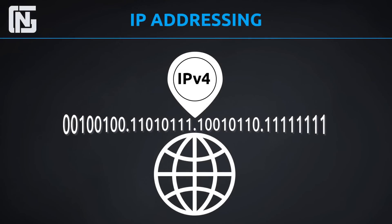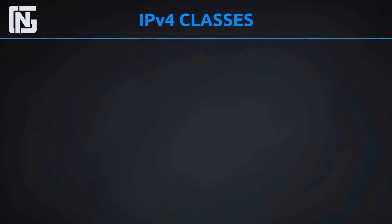Now that you understand what IP addresses are, how to convert binary to decimal, what a network ID and a subnet mask are, let's go ahead and talk about the class system. I saved this for last because it is something you need to know, but now you understand what a subnet mask is.